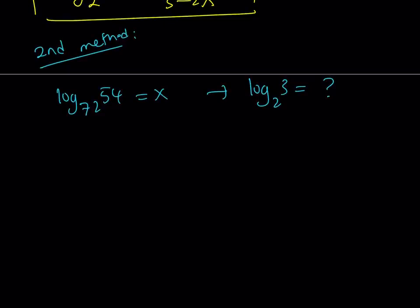So the main definition tells us that this can be written as 72 to the power x equals 54. Even if you don't know logarithms just look at the definition because then you can convert the logarithmic expression into an exponential one.